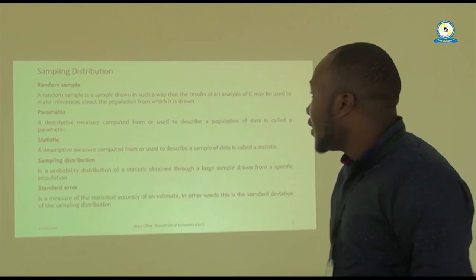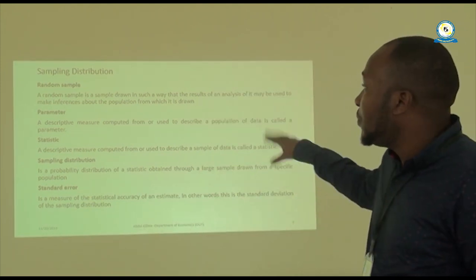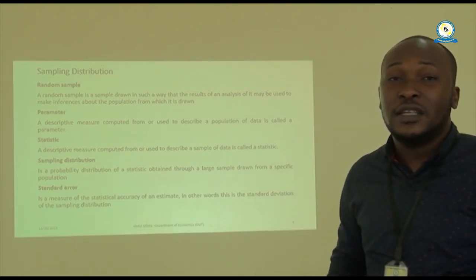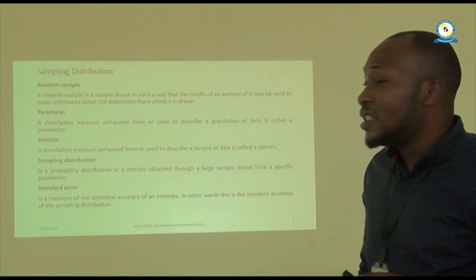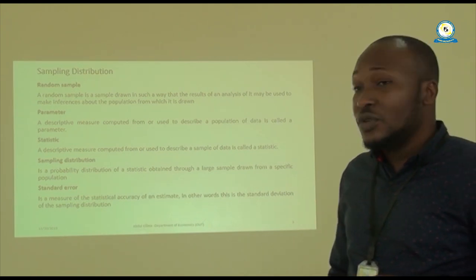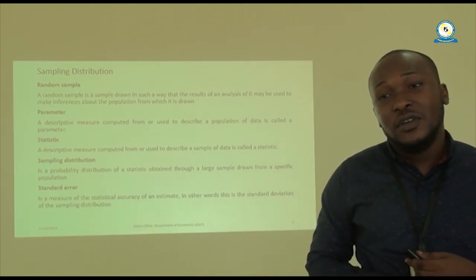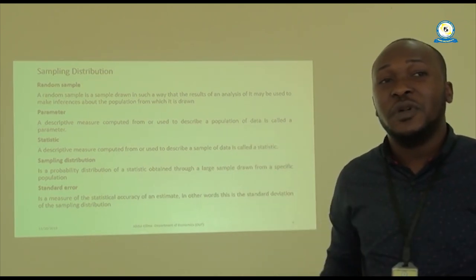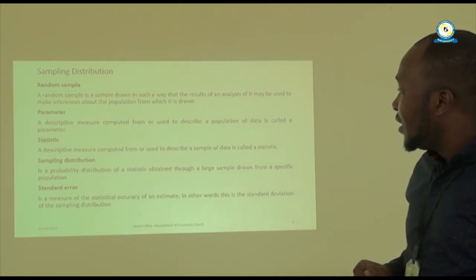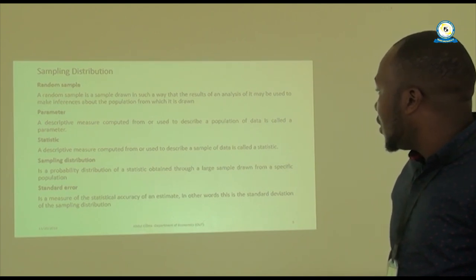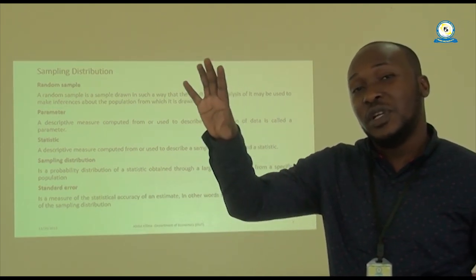Now we move to Knowledge Area five: Sampling Distribution. A random sample is drawn in such a way that results of analysis can be used to make inferences — meaning a true representation of the population. A parameter is a descriptive measure of the population; for example, if your population is farmers, the farmers are the parameter. A statistic is a descriptive measure computed from a sample. So a descriptive measure of a sample is a statistic, and a descriptive measure of a population is a parameter.